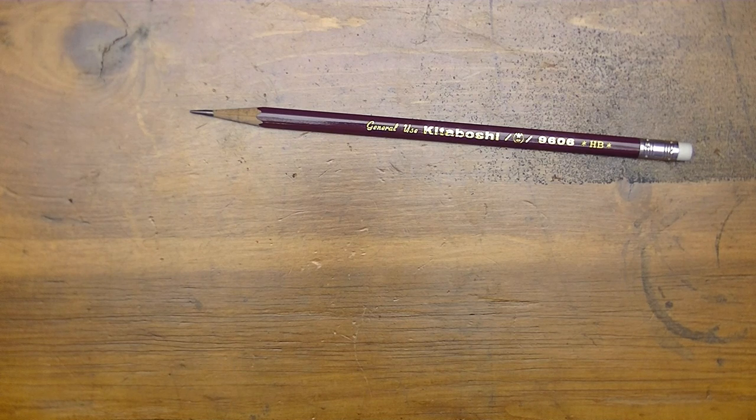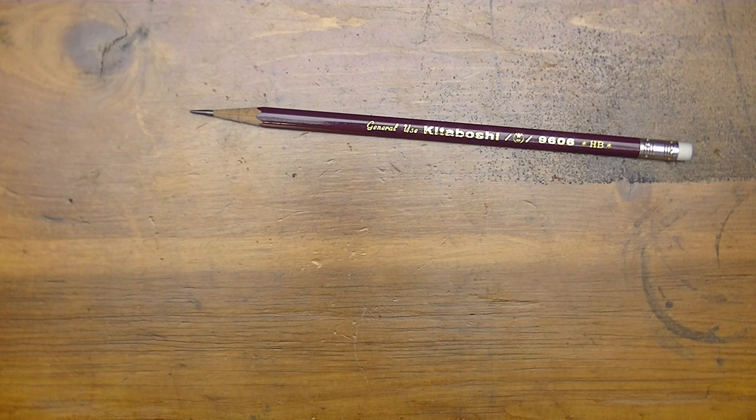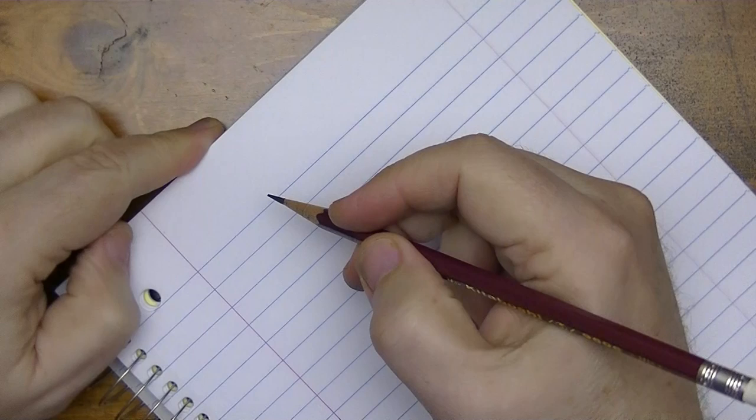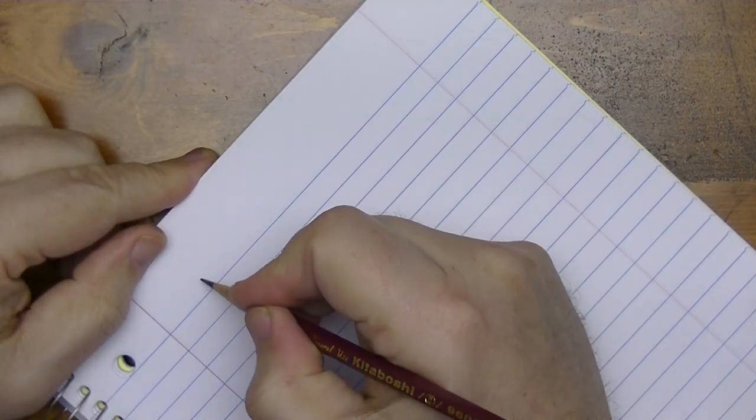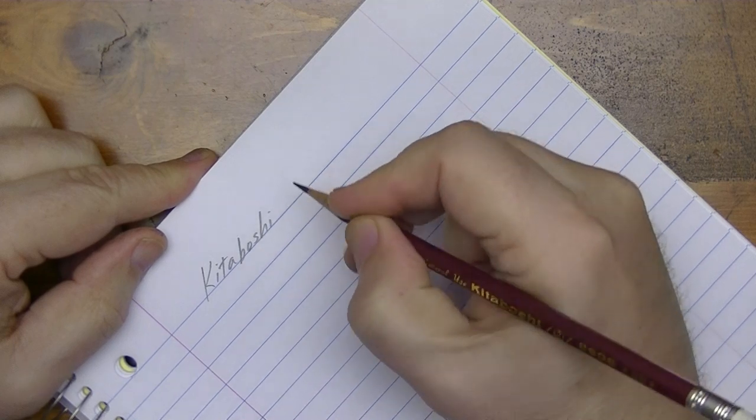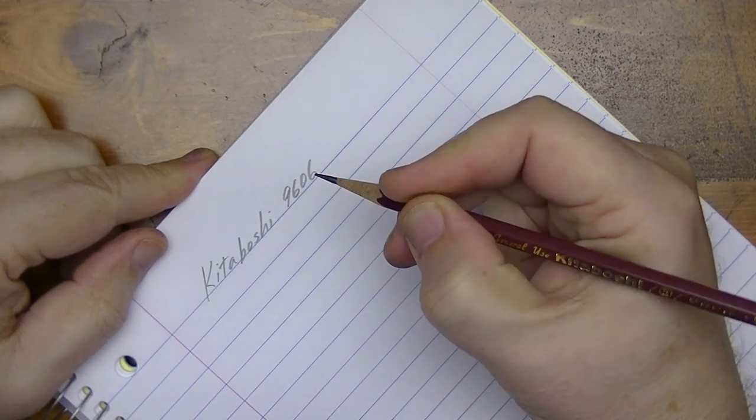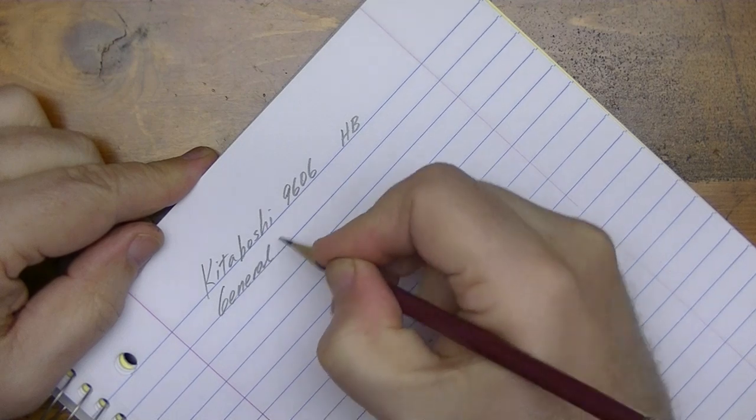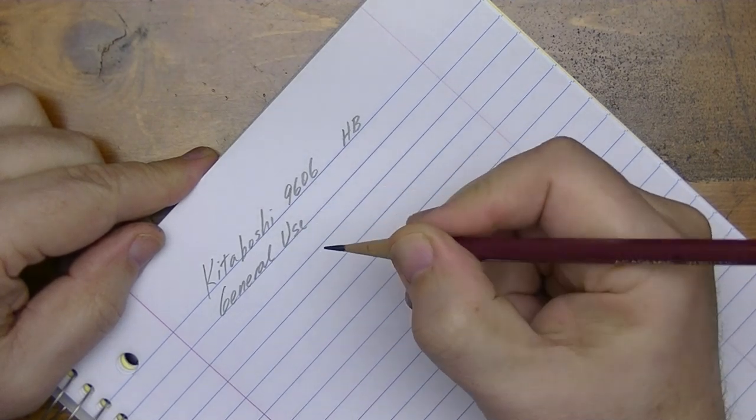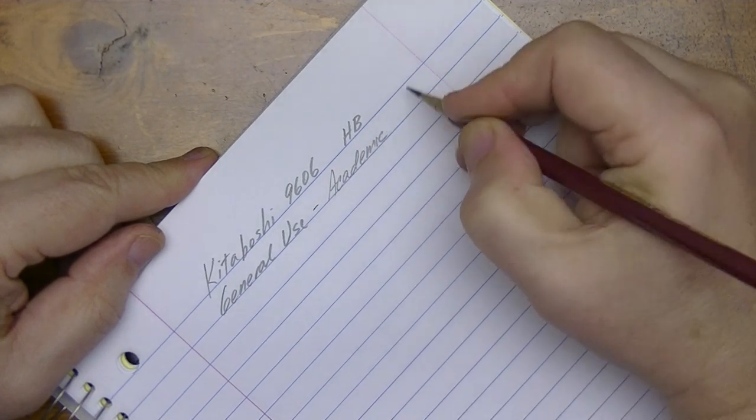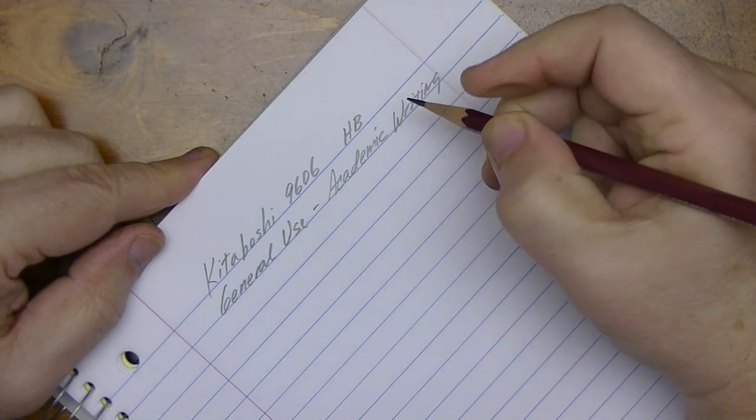The next thing to do is to do a little writing with this and see how it feels. Won't be actually doing academic writing since I don't really know what that is. This is the Kitabashi 9606, an HB pencil, listed for general use with academic writing.